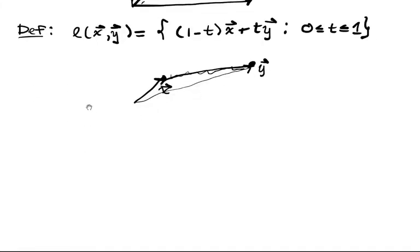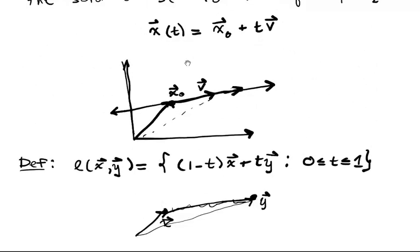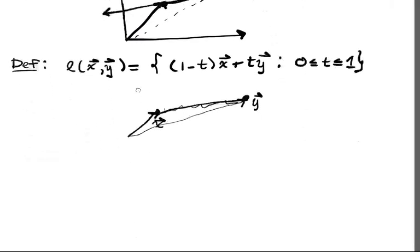Now, how about a plane? How do we represent a plane? We can represent a line parametrically just by using this equation. And that's an arbitrary dimension. But how do we represent a plane?